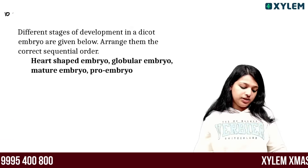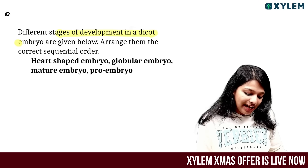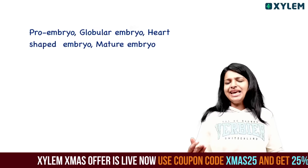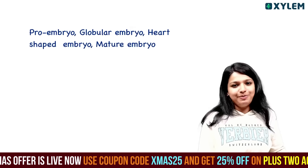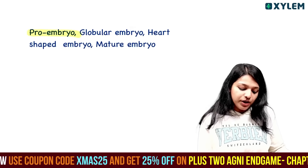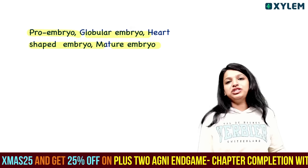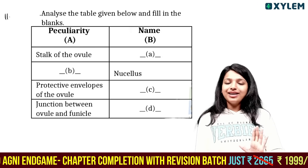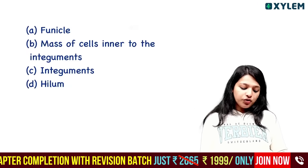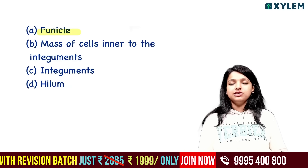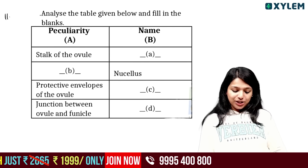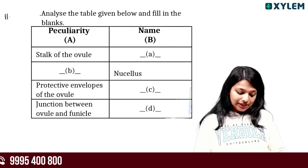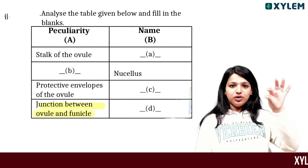Different stages of development in dicot embryo arranged in correct order: pro-embryo, globular embryo, heart embryo, mature embryo. Parts of the ovule: the stalk of the ovule is the funicle; mass of cells is the integuments; protective envelope of the ovule are the integuments; junction between ovule and funicle is the hilum.